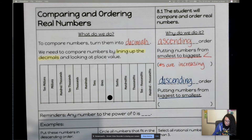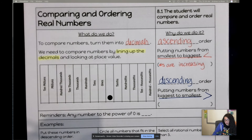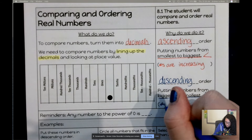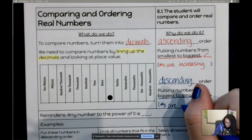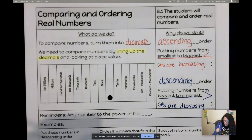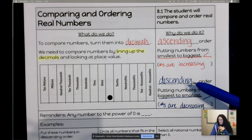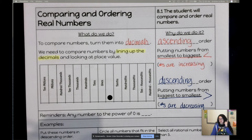Descending order means putting numbers from big to small — your numbers are decreasing. You might see all these different words: ascending means small to biggest, increasing; or descending means big to small, decreasing. All those words are fair game.